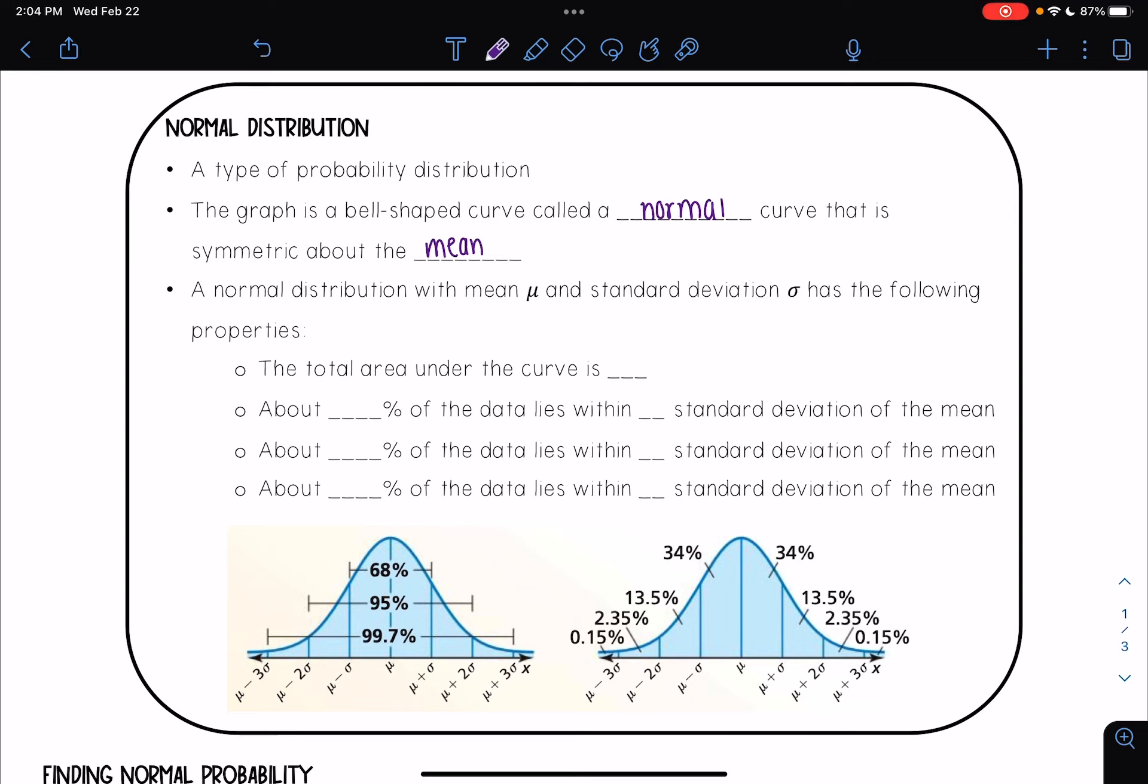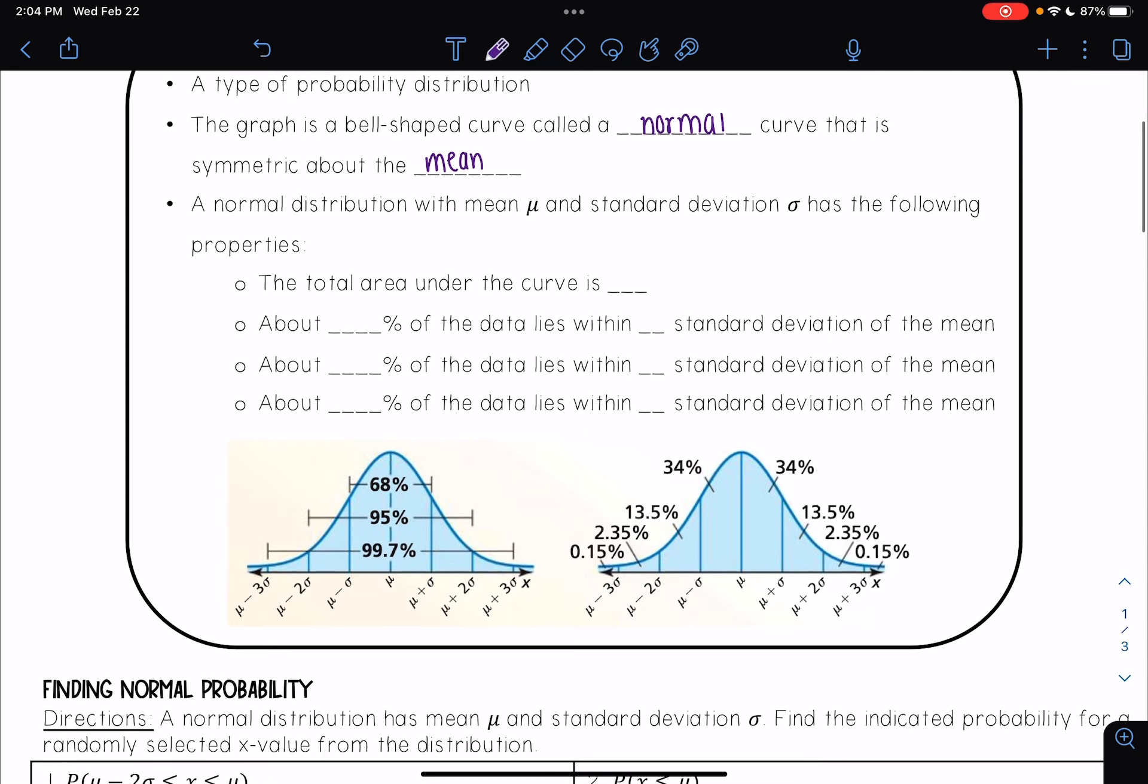And a normal distribution with mean μ and standard deviation σ has the following properties. First, we see that the total area under the curve is one. And we see that about 68% of the data lies within one standard deviation of the mean. And we see that in this first graphic here.